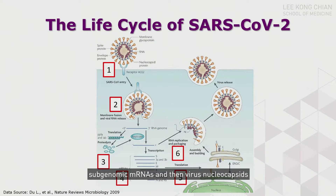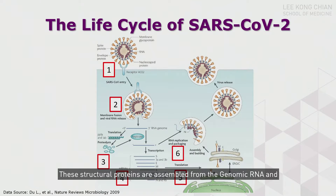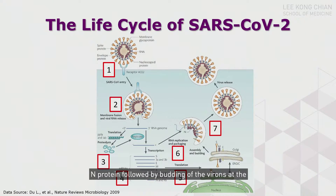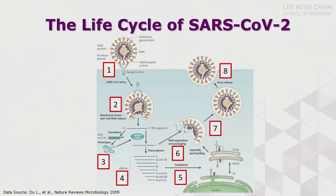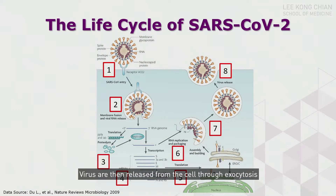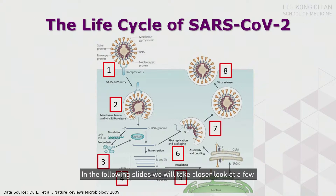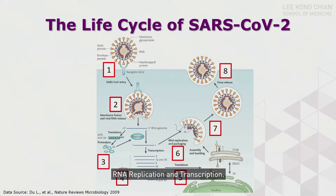Virus nucleocapsids are assembled from the genomic RNA and N protein, followed by budding of the viral particle at membranes derived from the ER and Golgi apparatus. Virions are then released from the cell through exocytosis. To have a better understanding of the virus, in the following slides we will take a closer look at a few essential steps during this life cycle — namely entry, RNA replication, and transcription.